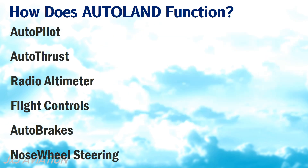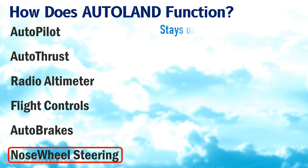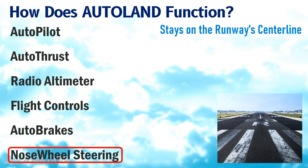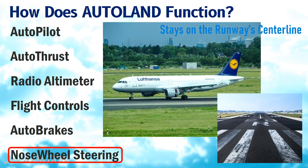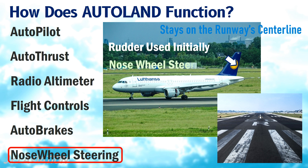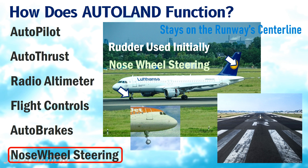The Autobrakes will ensure a smooth deceleration of the aircraft on the ground and also prevent skidding. The nose wheel steering system is also linked with the Autoland system to ensure the aircraft stays on the runway's centerline. When an aircraft lands, the rudder is initially used to keep the aircraft centered on the runway. As the speed reduces, the effectivity of the rudder reduces and the nose wheel steering system is used to keep the aircraft centered on the runway.